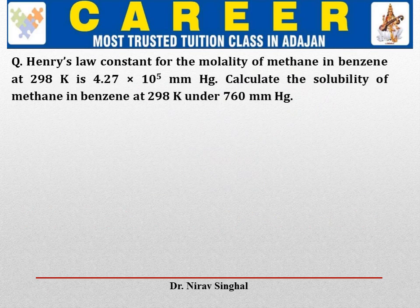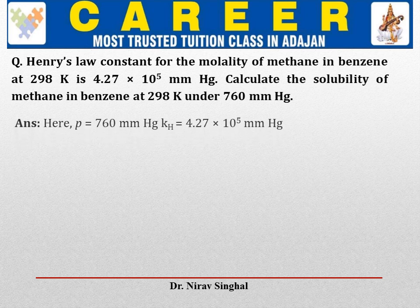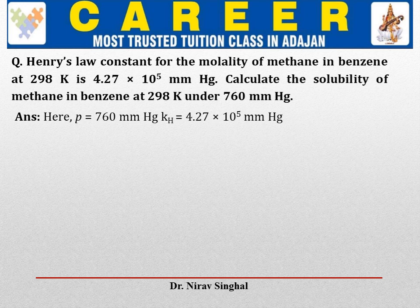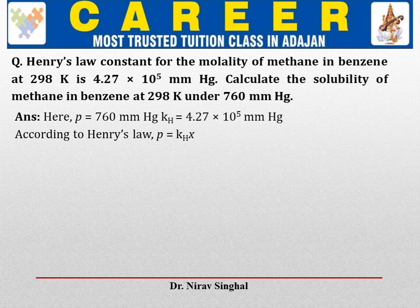Let us consider the first one. Henry's law constant for the molality of methane in benzene at 298 Kelvin is 4.27 × 10⁻⁵ mm Hg. So KH is given as 4.27 × 10⁻⁵ mm Hg. Calculate the solubility of methane in benzene under a pressure of 760 mm Hg. So pressure P is 760 mm Hg. According to Henry's law, P = KH × X. We need to calculate the solubility value X, so X = P / KH.